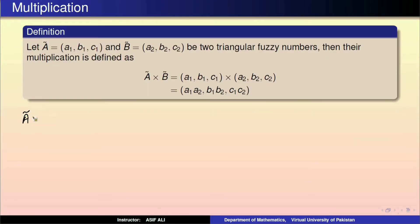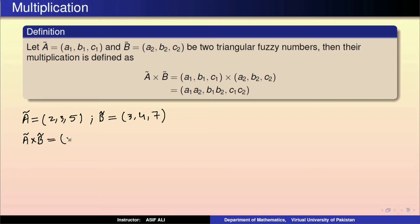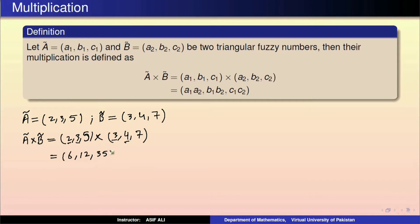اب ہم اس کی example دیکھتے ہیں: Let A tilde be equal to (2, 3, 5) and B tilde is equal to (3, 4, 7). So A tilde times B tilde is equal to (2, 3, 5) times (3, 4, 7), which is equal to (2×3, 3×4, 5×7) = (6, 12, 35).